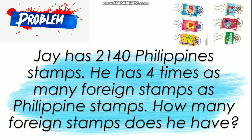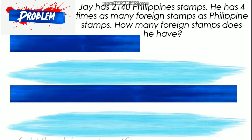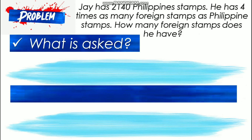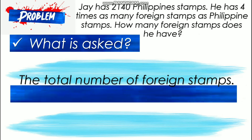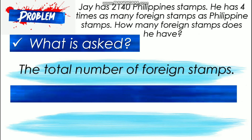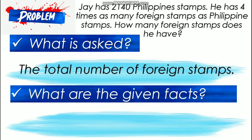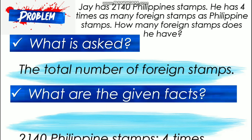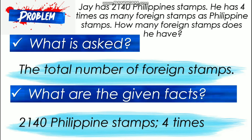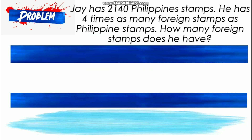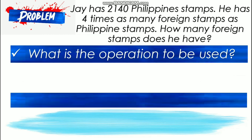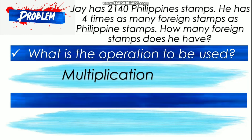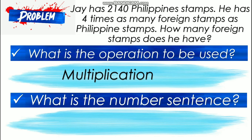Let us use the steps in solving the problem. First, what is asked? The question is about the total number of foreign stamps. Then, what are the given facts? We have 2,140 Philippine stamps and 4 times as many foreign stamps. What operation are we going to use? It's multiplication.